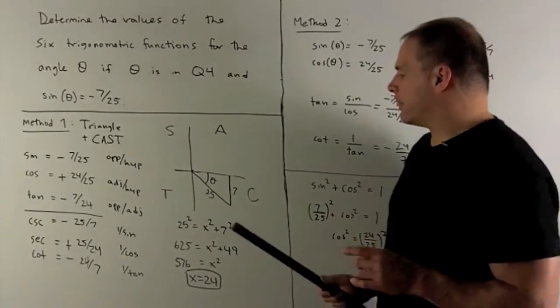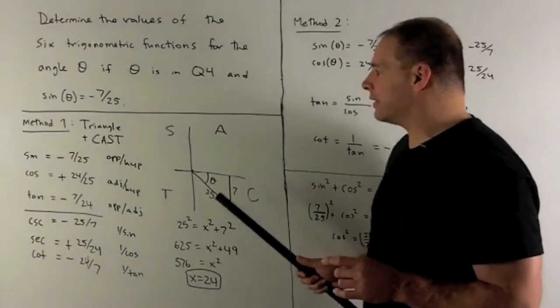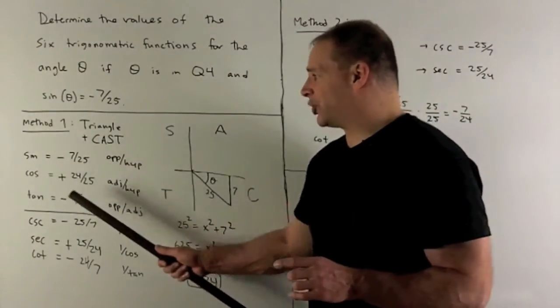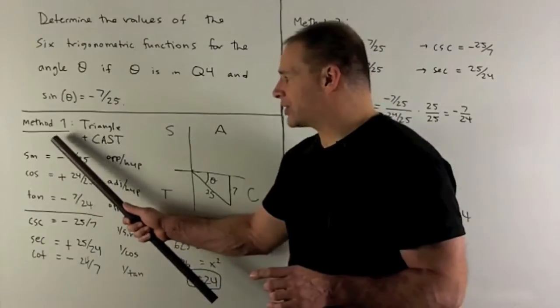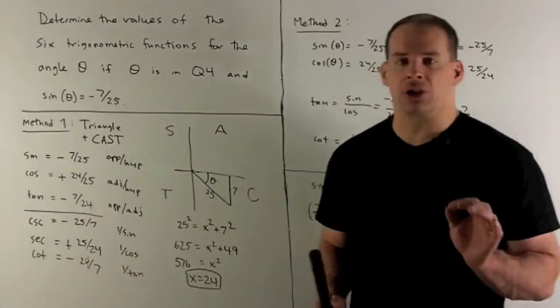So what happens then? If I'm in quadrant four, cosine is going to be positive, sine and tangent are negative. So that gives us our first three values for our trig functions.